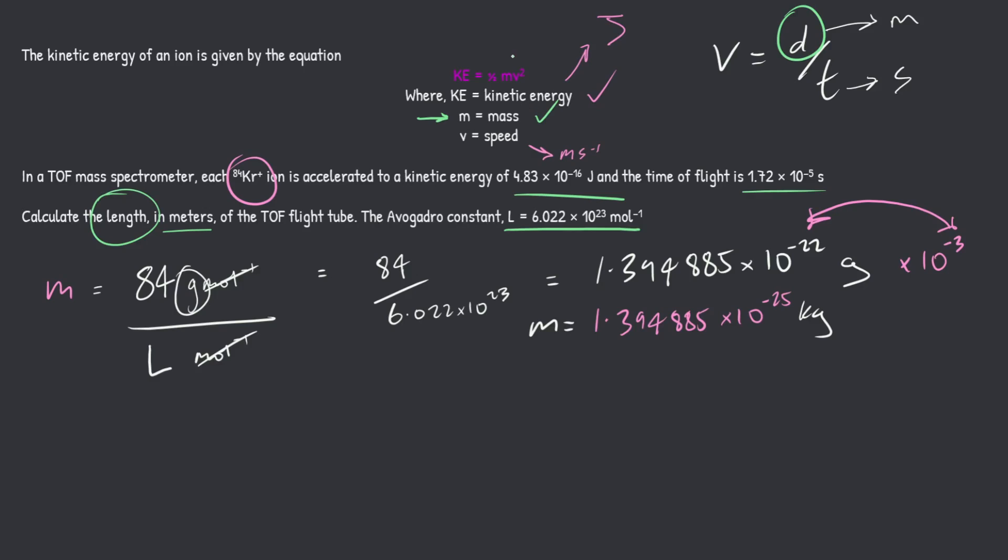So you want to take this approach to pretty much every calculation in chemistry. If you have a three variable calculation, so we have an M, a V squared, and a KE, if you have two of the three, so for example, we have kinetic energy and we have mass, you want to rearrange it to make the unknown the subject. And so that, in this case, is V squared, right? That's exactly what I'm going to do.